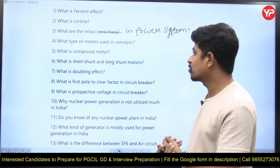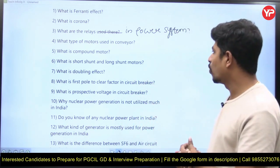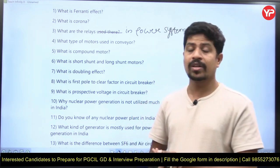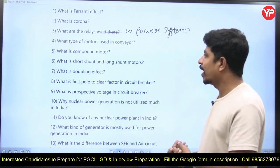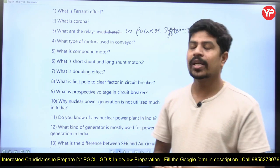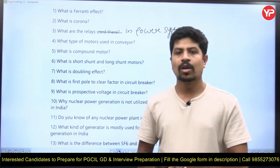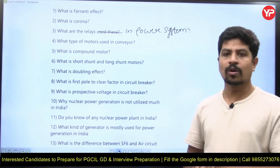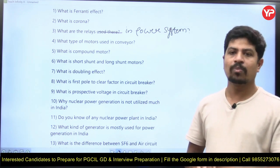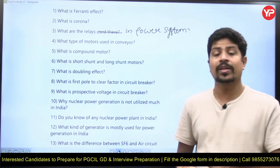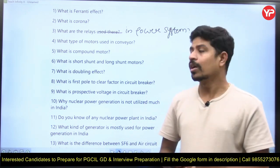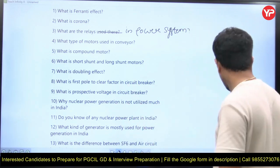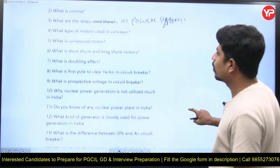Next question: what are the types of motors used in conveyors? This question is from Electrical Machines. What is a compound motor? In DC machines, you get compound motors. There are two types: cumulatively compound and differentially compound. Then there is long shunt and short shunt depending on the type of connection — there is a lot of classification. What is short shunt? What is long shunt?